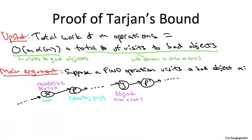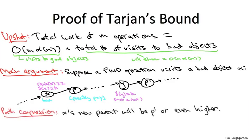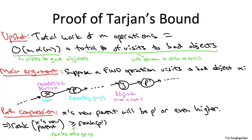Now let's understand the effect of the path compression, which is going to happen subsequent to this find operation. X's parent pointer is going to be rewired to the root of this tree. The root of this tree is either at P' or even higher than that. Given that fact, let's understand how much bigger the rank of X's new parent — P' or higher — is compared to the rank of its old parent P. The rank of X's new parent is at least the rank of P'. If P' is in fact the root, then the rank of X's new parent is just the rank of P'; otherwise, this new parent is even higher than P', and since ranks only increase going up the tree, that means it would be only higher than the rank of P'.